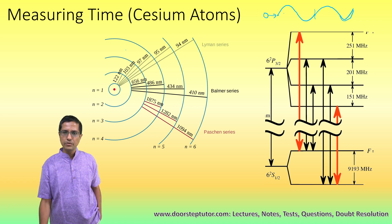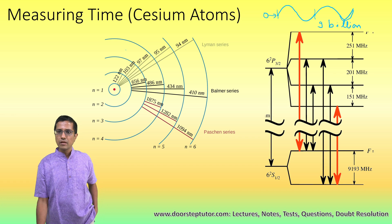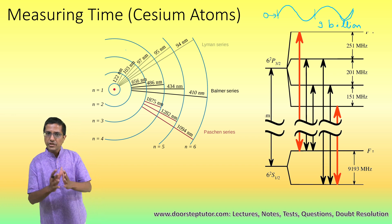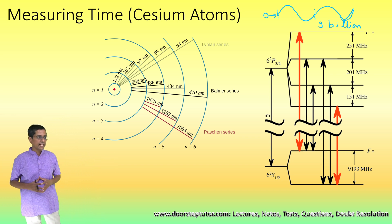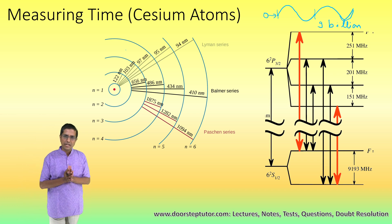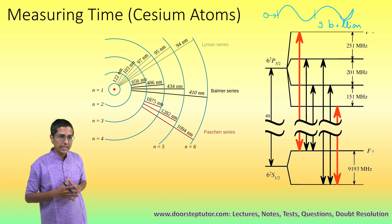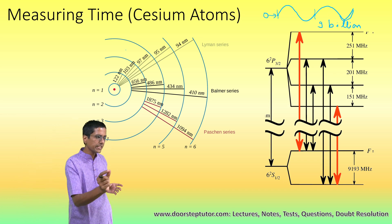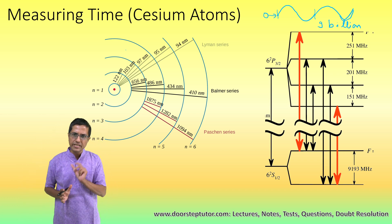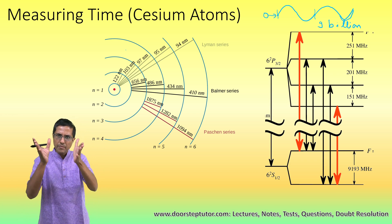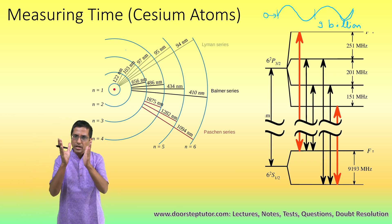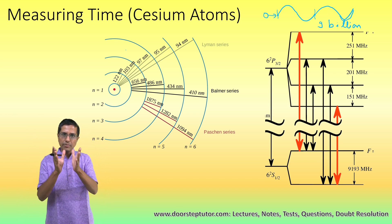...if we put almost 9 billion such time periods together, then we get one second. This is how we have defined time — we take this particular frequency of the cesium atom.